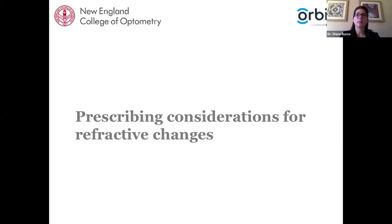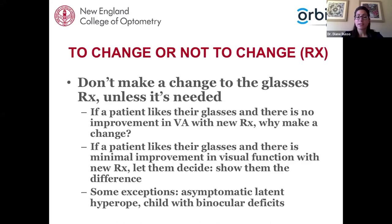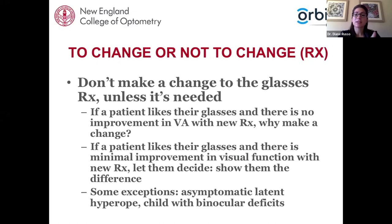When thinking about making a refractive change for someone with existing glasses, the first rule is: don't make a change unless it's needed. We can probably find prescription changes for every patient, as there are normal variations, but the first question I ask is whether it's really needed. Is the patient happy with their glasses? What is their current level of vision? Are the changes I'm finding large or small, and are they actually making an improvement? If it's not improving the patient's vision and they're happy, I won't prescribe the change.